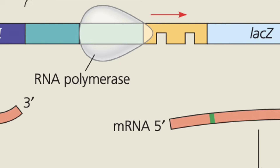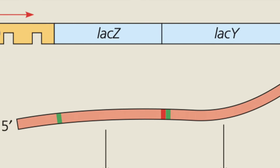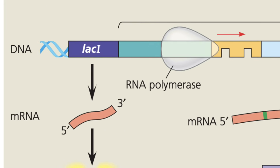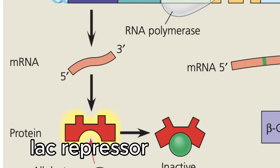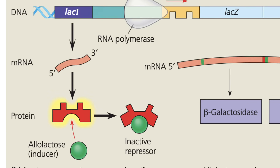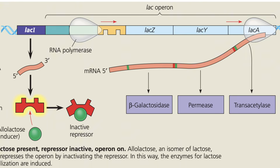The lac operon has a promoter and the structural genes, including that lactase gene. But in between, it has something called an operator. Somewhere else along the chromosome, there is a gene called the lacI gene, and it produces a protein called the lac repressor, which when transcribed and translated forms a protein that sits on that operator by default, blocking the RNA polymerase from transcribing those genes. But when we want these genes to be expressed is when there's lactose. It turns out that lactose, when found in the cell, can bind to that repressor, which then changes the shape of that repressor and removes it from the operator. This now clears the way for that RNA polymerase to produce lactase, because lactose is present.